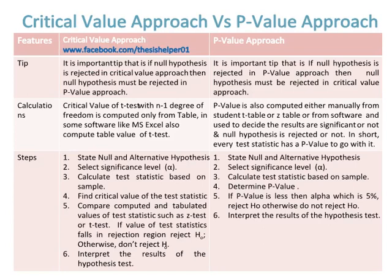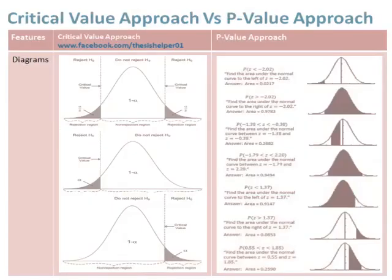Step six of the critical value approach is to interpret the results of the hypothesis test. There are also six steps in the p-value approach: step one — state null and alternative hypothesis; step two — select significance level alpha; step three — calculate test statistic based on sample; step four — determine the p-value; step five — if p-value is less than alpha (five percent), reject H-naught, otherwise do not reject; step six — interpret the results.